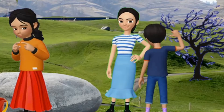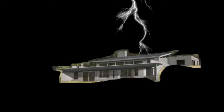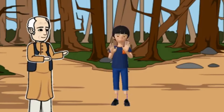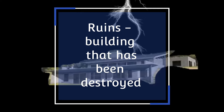Suresh was worried about how Usha would return alone in the dark, passing the haunted hill. Grandfather told a story about an English family that lived on the haunted hill a hundred years ago — the family members were killed by lightning. Grandfather had seen the two children of the family playing in the moonlight near the ruins. The word 'ruins' means a building that has been destroyed.